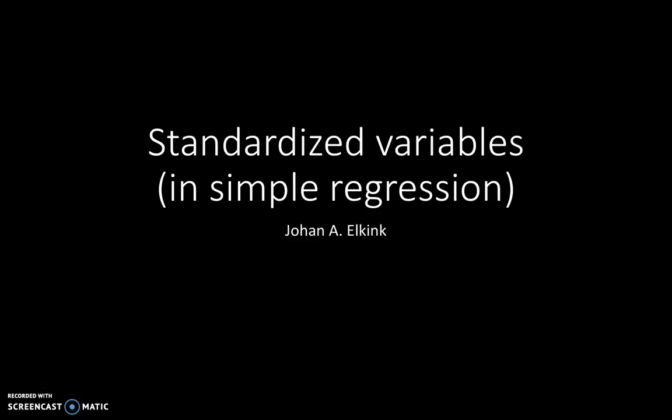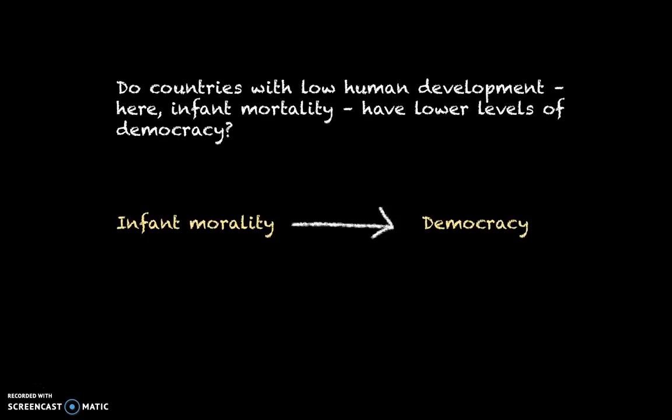Let me first introduce the example. We will look at a typical relation in the study of development and democracy, where the independent variable is one indicator of human development, namely infant mortality, and the dependent variable is democracy. We argue that countries that are more developed, more economically developed, as in having lower infant mortality, are better able to sustain a democracy and therefore more likely to be democratic.